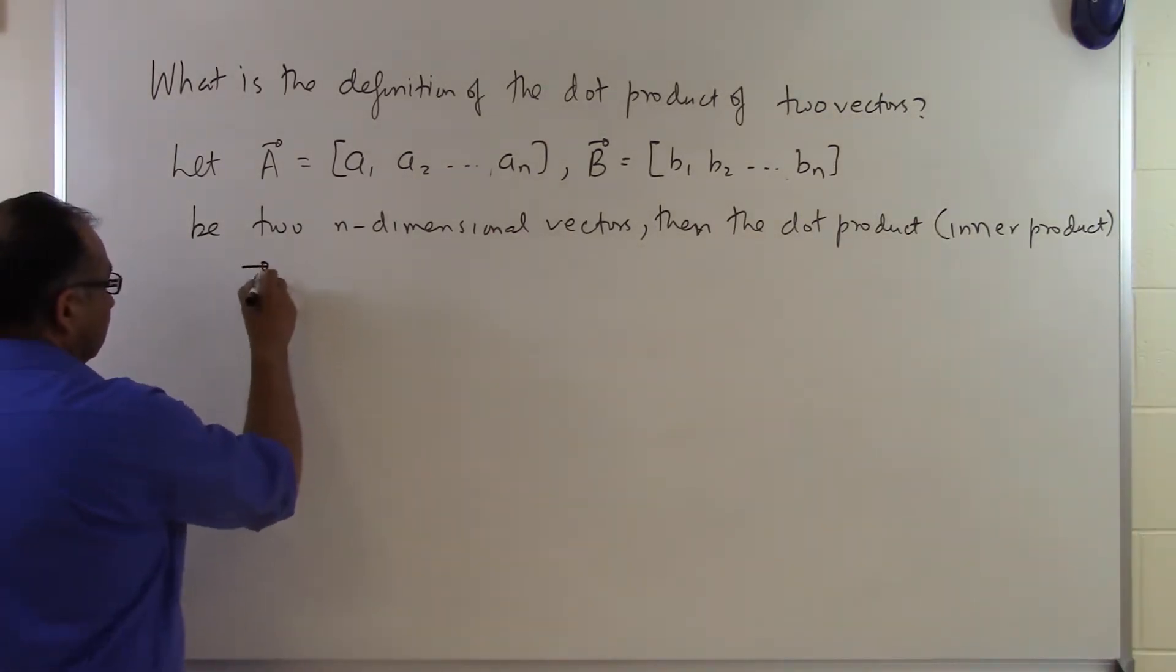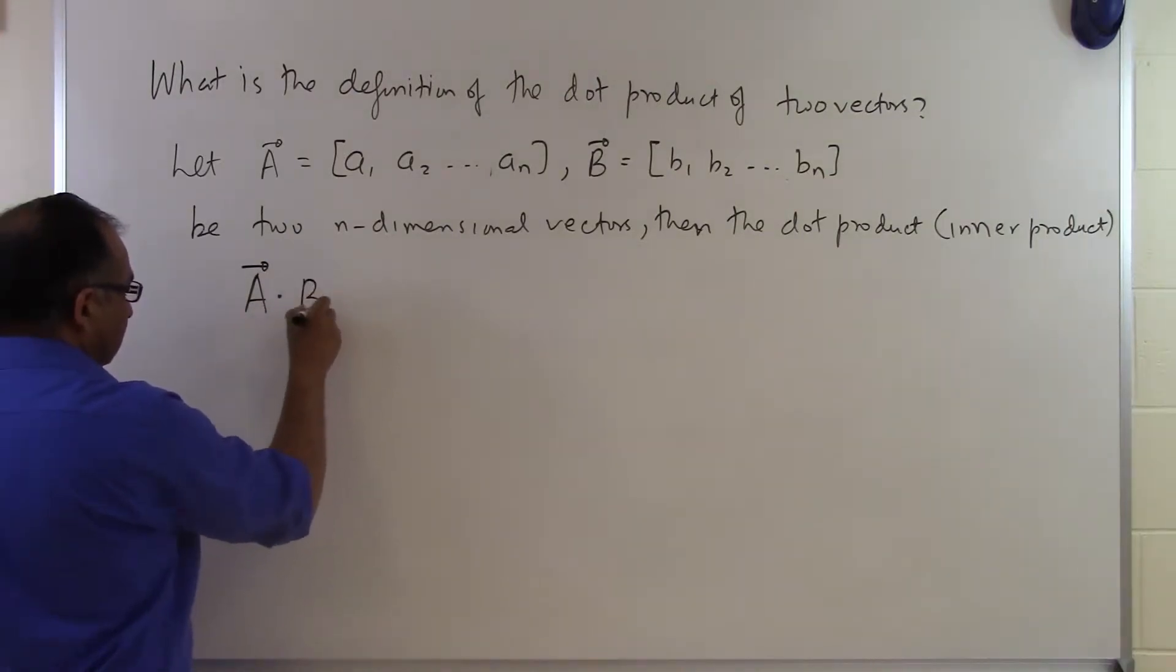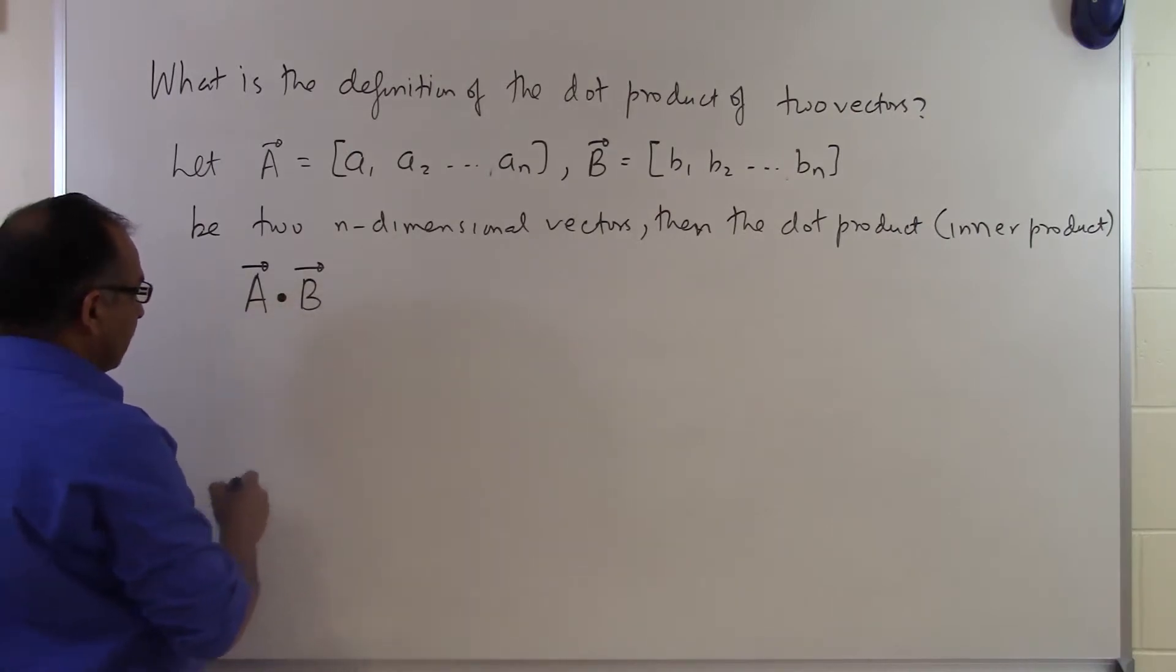All you do is put a dot between the two vectors of which you want to find the dot product.